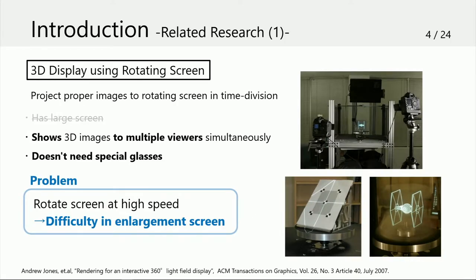Here is one related research about 3D display. This method uses a rotating screen. The system projects proper images to the rotating screen in time division. Multiple viewers can see 3D images simultaneously without special glasses. However, it is difficult to enlarge the screen because of the structure which rotates the screen at high speed.